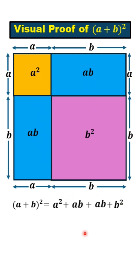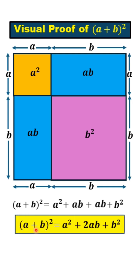After simplification, we have (a+b)² equals a² plus 2ab plus b². That is the answer.